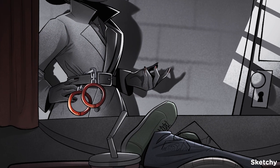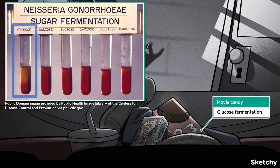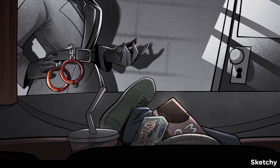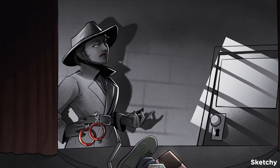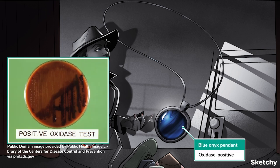For one, both Neisseria meningitidis and Neisseria gonorrhoeae can metabolize glucose, as presented here by this movie candy. But only Neisseria meningitidis can metabolize both glucose and maltose. To help you remember that Neisseria is also oxidase positive, take a look at this blue onyx pendant. These blue onyx rings and necklaces are our recurring symbol for oxidase positive.